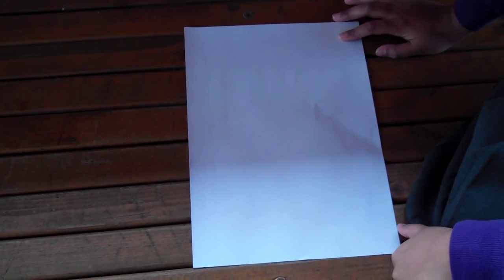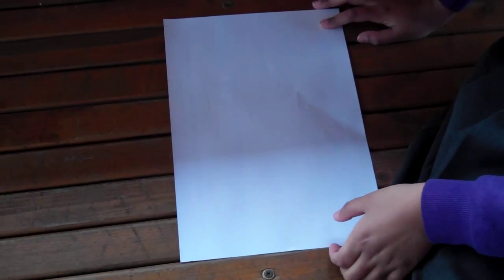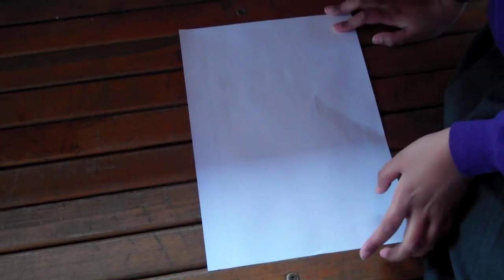Hello, and we are from Ash Class, Springfield Junior School. Today we're going to teach you how to make an origami dog. We're doing this video for Pass the Blog.